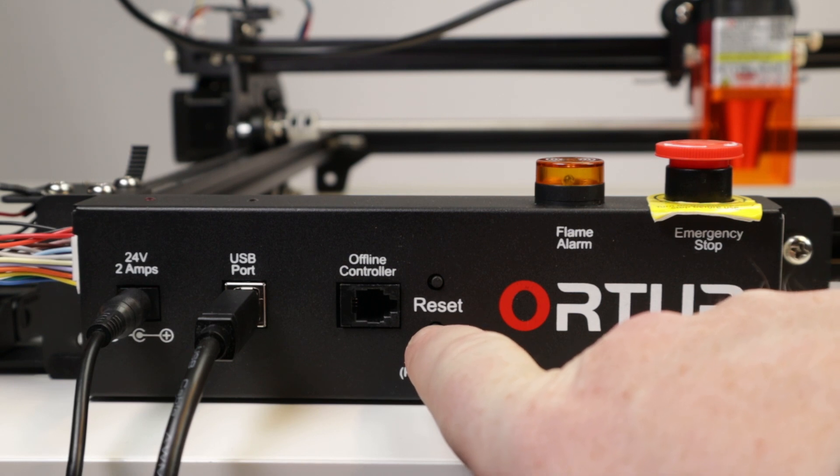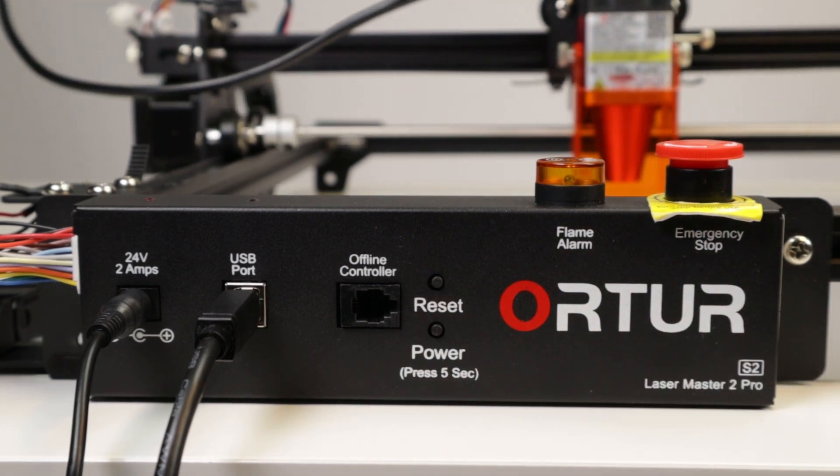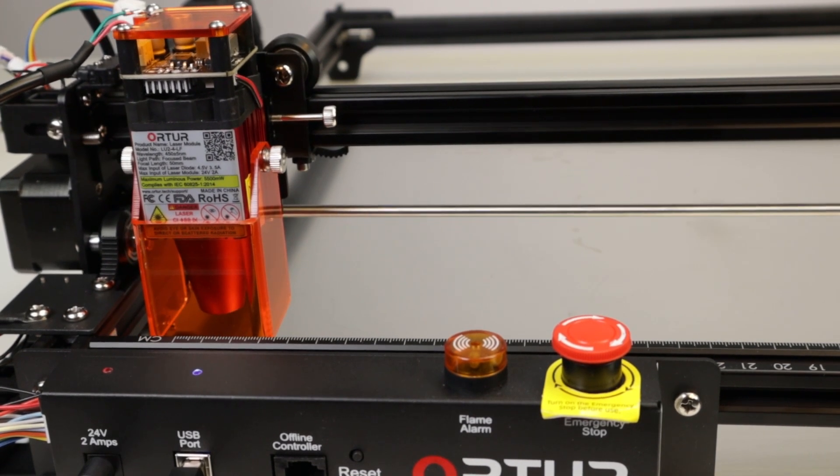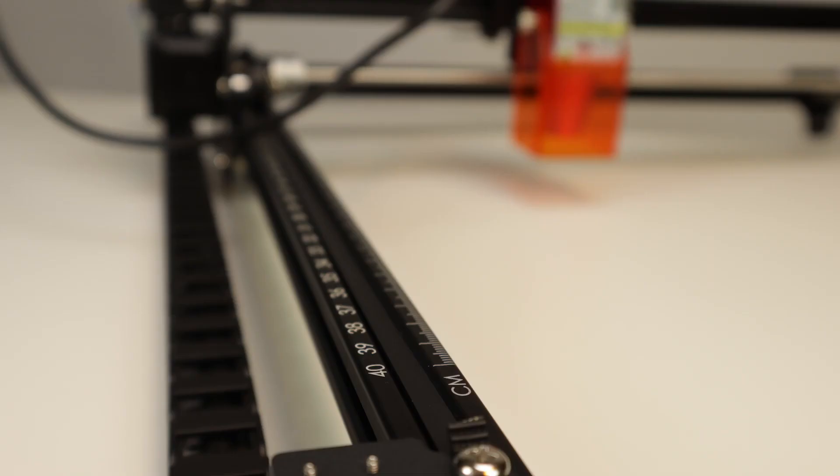We're going to be testing both cutting and engraving capabilities. The laser comes with end stops that allows you to do automatic homing to zero the machine. It has a working area of 40 by 40 centimeters.